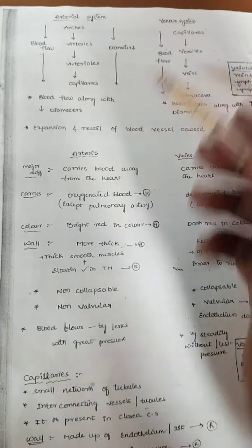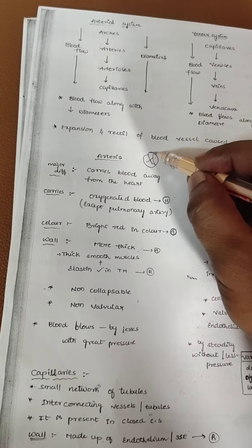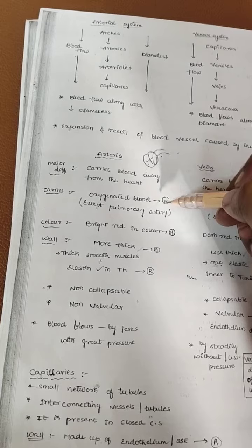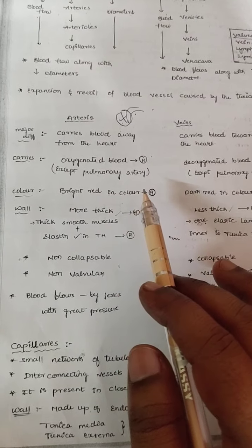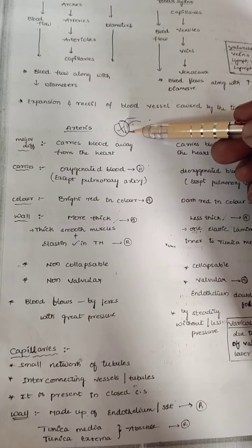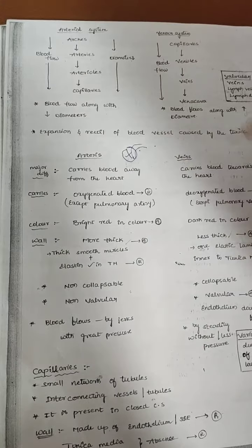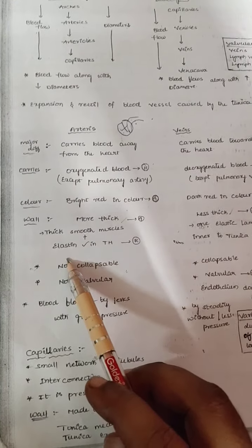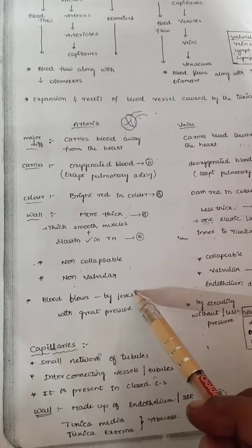Arteries carry the blood away from the heart. They carry oxygenated blood, except the pulmonary artery. The color of blood in arteries is bright red because the blood is oxygenated. The walls are more thick because the blood is pumped from the heart to all parts of the body, so the blood vessels need a thicker region. They have thick smooth muscles and elastin in the tunica media. Arteries are non-collapsible, non-valvular, and blood flows in jerks with greater pressure.